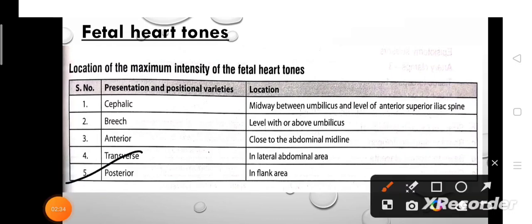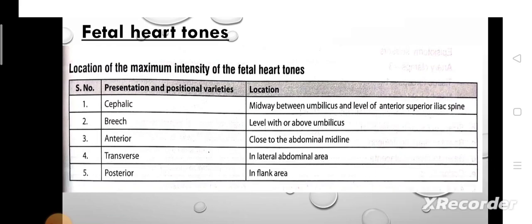If presentation and positional varieties are posterior, the fetal heart tone is located in the flank area. In posterior presentation, the baby's head is down but facing the mother's front instead of her back. So we have covered fetal heart tone locations in different types of presentation and positional varieties.